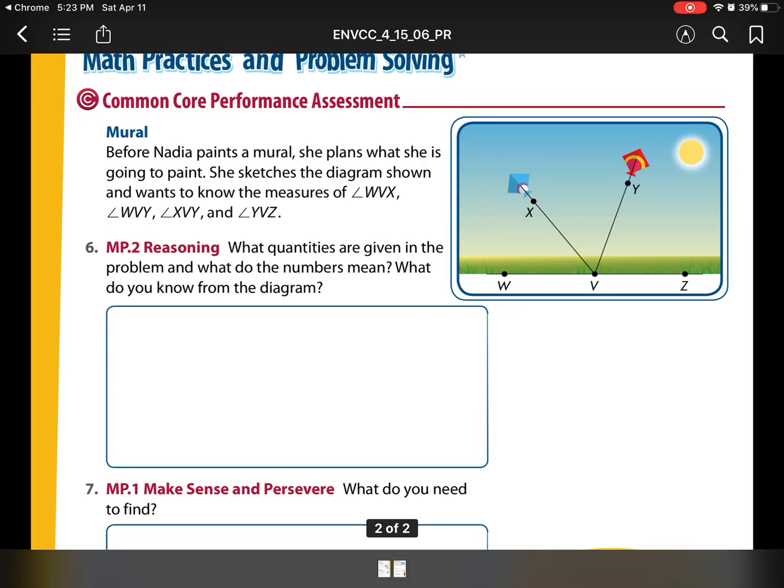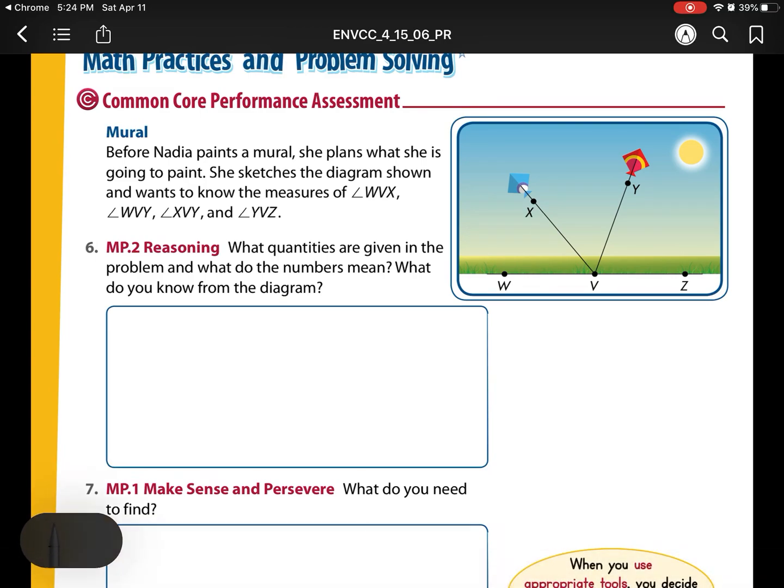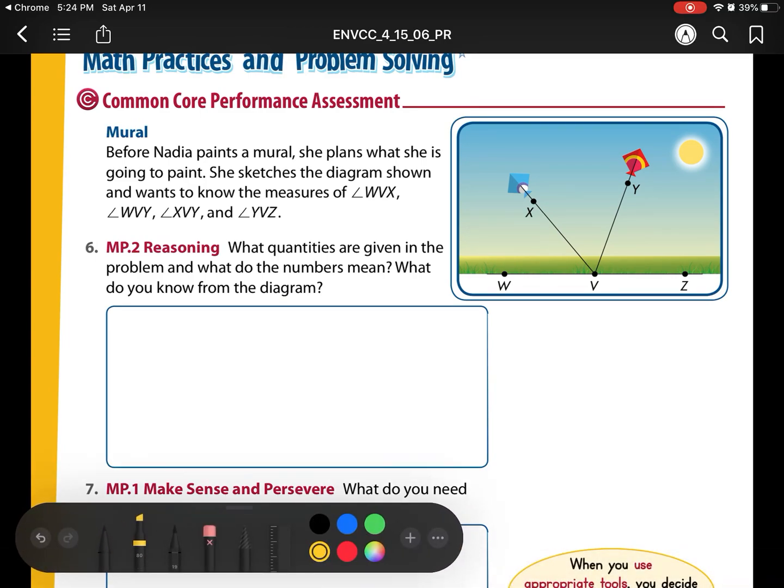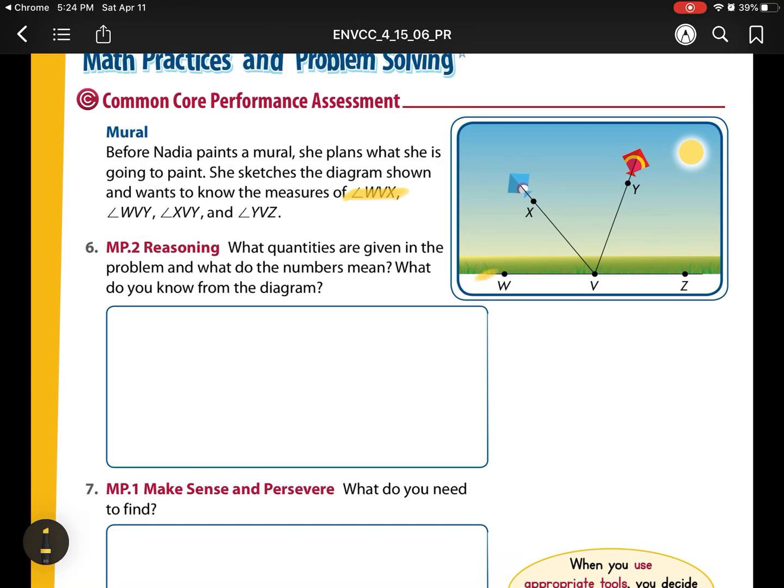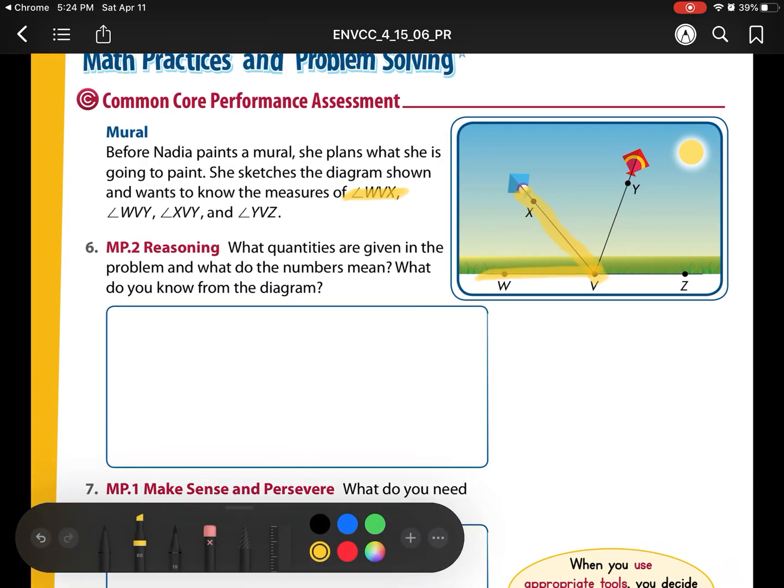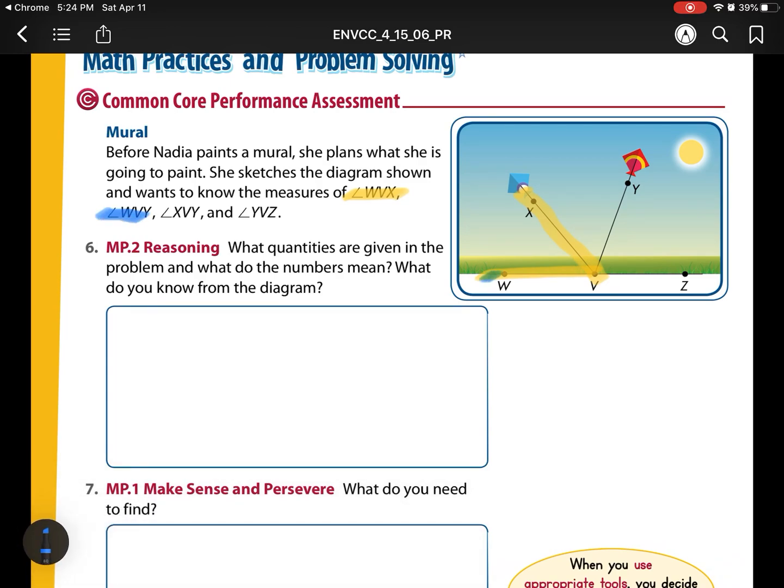So this is our mural. Before Nadia paints the mural, she plans what she is going to paint. She sketches the diagram shown and wants to know the measures of angle WVX. So I'm going to highlight these. So WVX is right here. She also wants to know WVY. I'm going to put that one in blue, WVY.